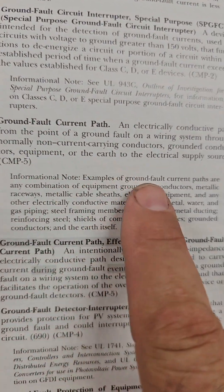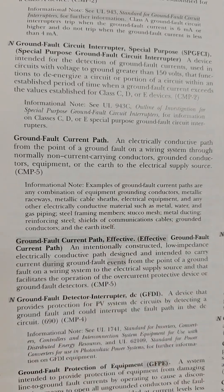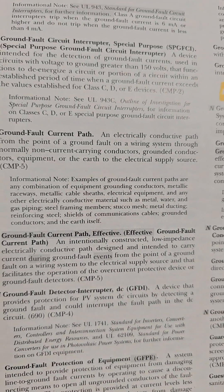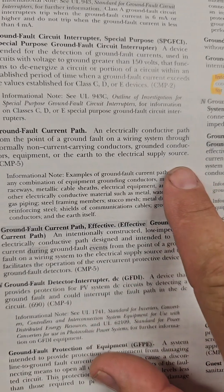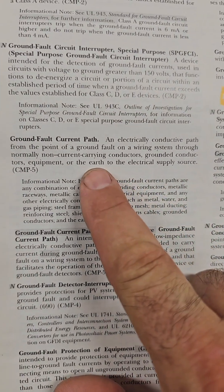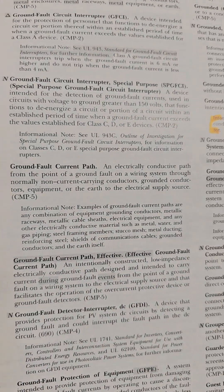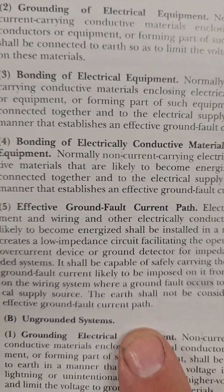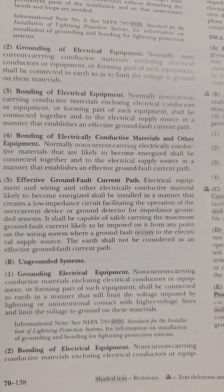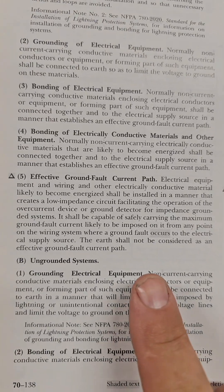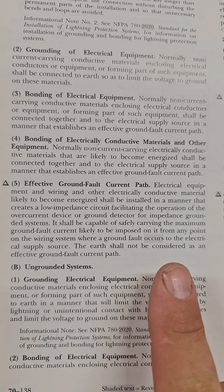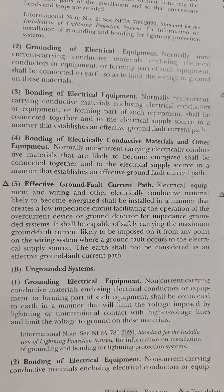But if you go to ground fault path, it does say the earth is in part of the path or could be part of the path. It's still going to the source, but the earth is listed as part of the path. It looks what happens when you go to 250. In 250 grounding and bonding, they talk more about effective ground fault path. And the last line is, the earth shall not be considered as an effective ground fault path.